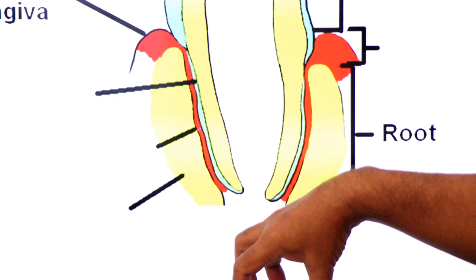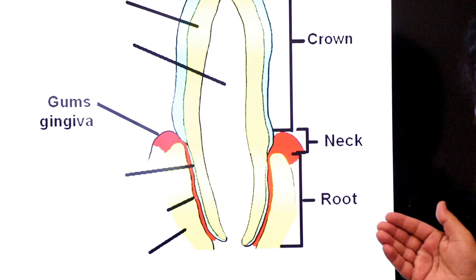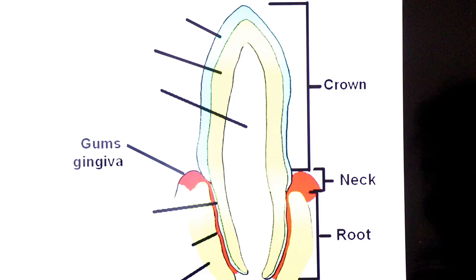So see here: the crown part is located above the gums, the root part is inside the gums, and here you see the neck where the crown meets with the root. Anatomically there are three parts of the tooth: crown, neck, and root.